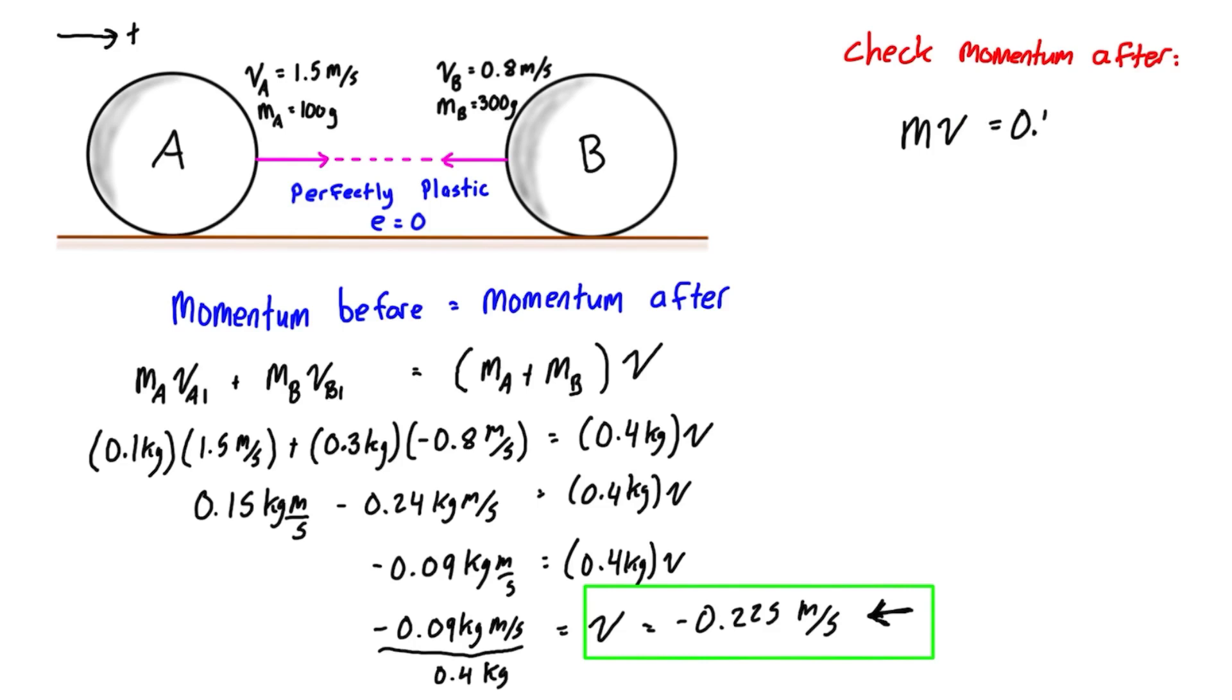Which equals 0.4 kilograms times its velocity of negative 0.225 meters per second. 0.4 times negative 0.225 also gives us negative 0.09 kilogram meters per second, which is good. That is what we expect because that's what we also calculated for momentum before the impact, and this confirms that momentum before is indeed equal to momentum after.